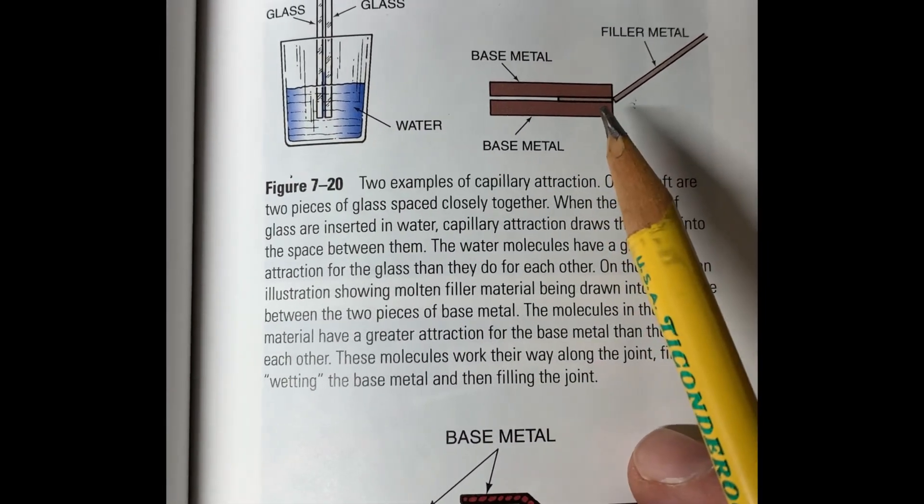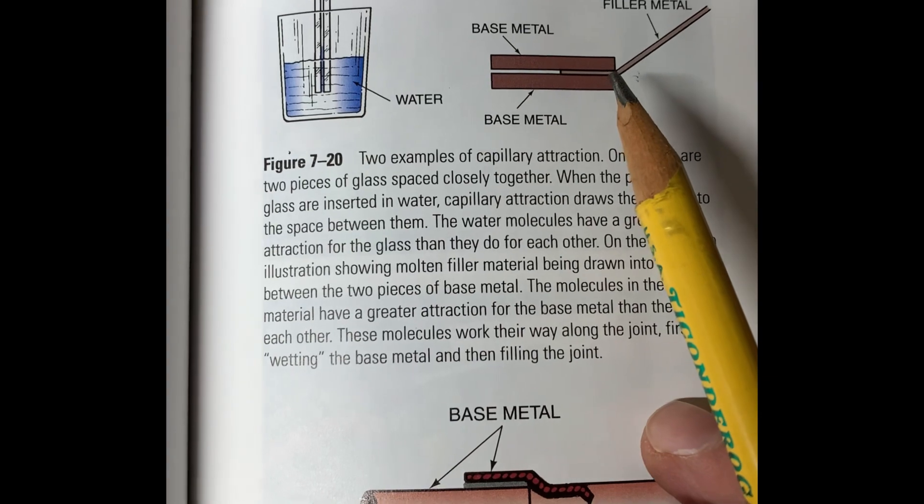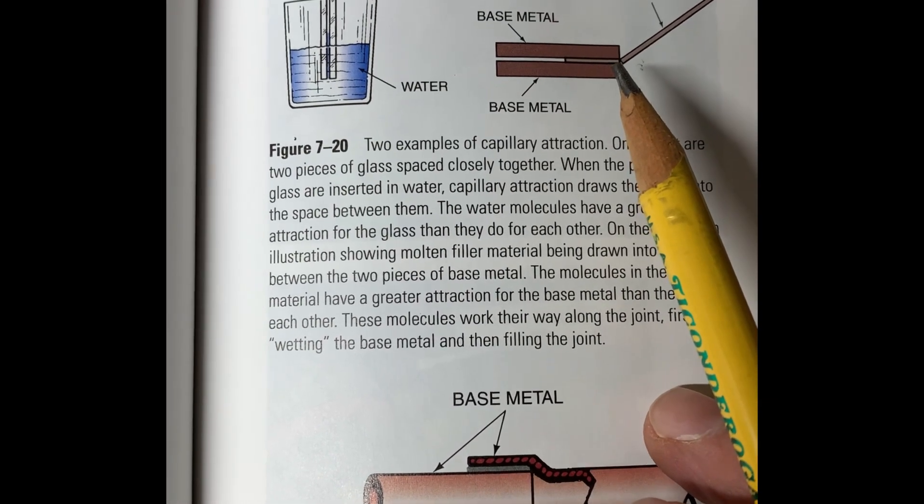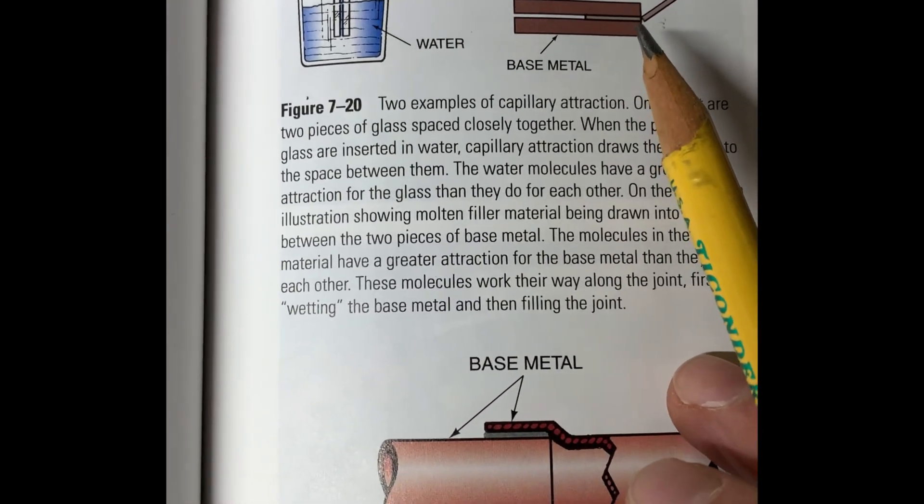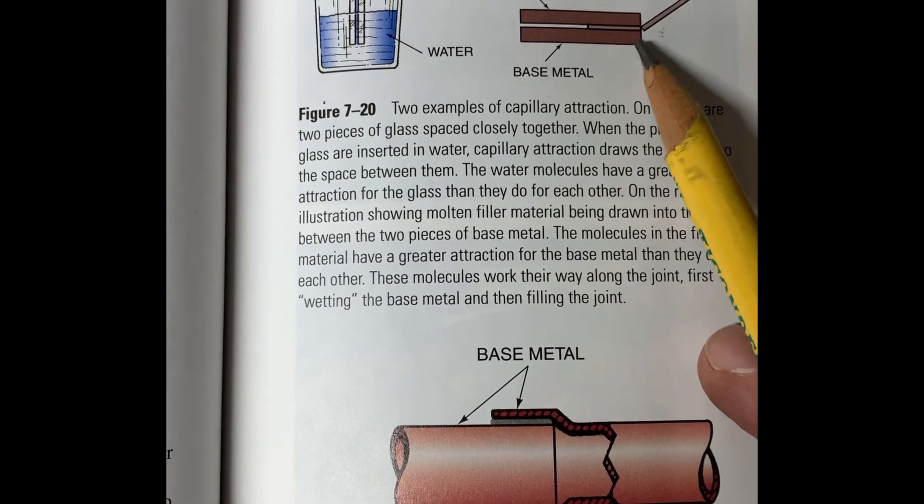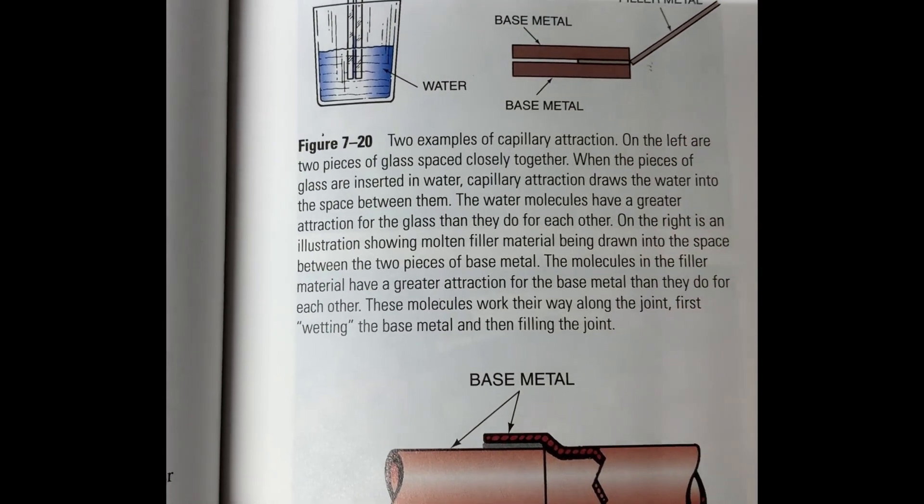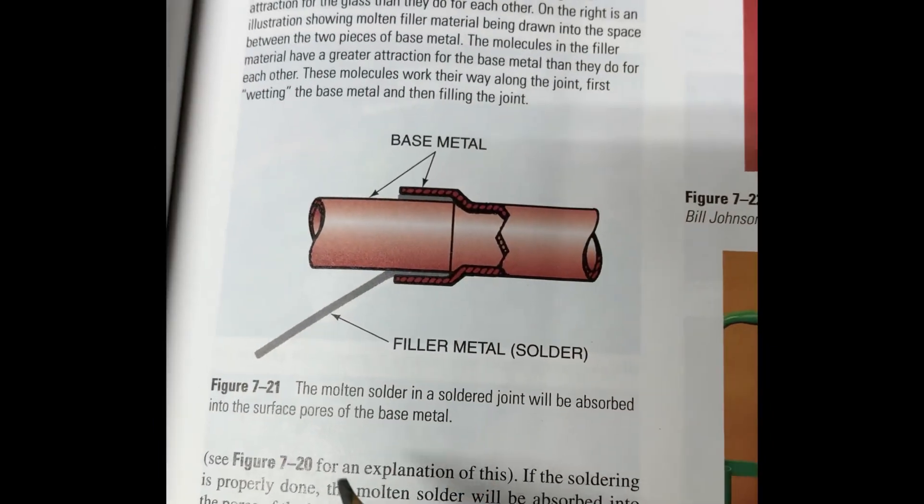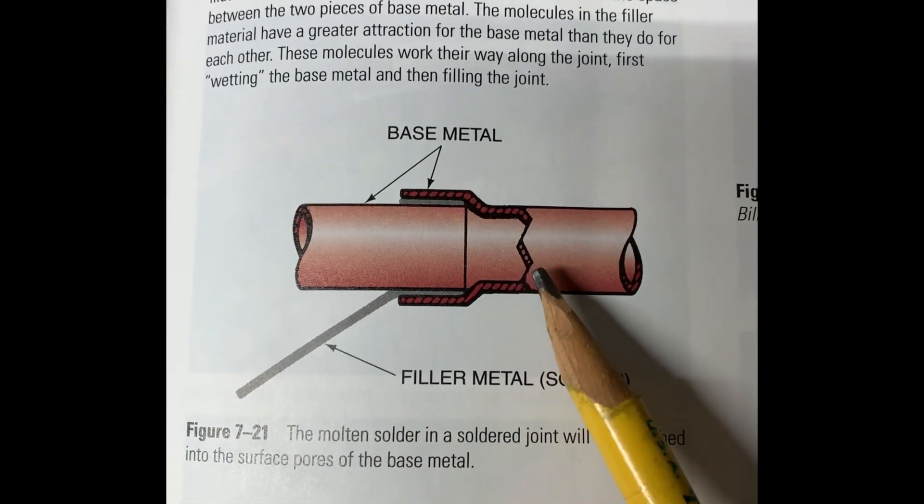So you heat the base metal, which is your copper. As that reaches critical temperature, you then will melt your filler material. As this starts to stick to it, you can tap on that as you're heating your copper up. As it starts to stick to it, you are almost there. Your critical temperature is almost there.